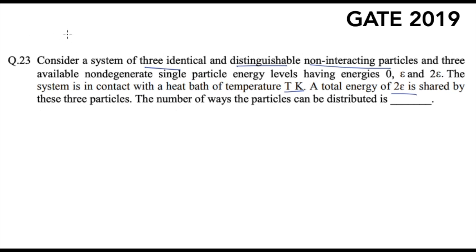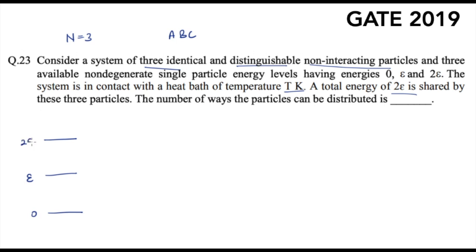First, you should know how many particles you have — three particles, and all of them are distinguishable, meaning they are different from each other. Generally, the formulas we study in statistical thermodynamics are for indistinguishable particles where all particles are considered the same. But here the particles are distinguishable. So let's call our three particles A, B, and C. They are non-interacting, and three available non-degenerate single particle energy levels exist. Let's draw them: energy level 0, energy level epsilon, and energy level 2 epsilon.